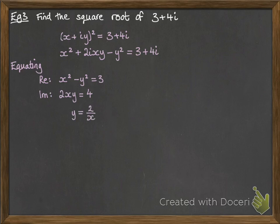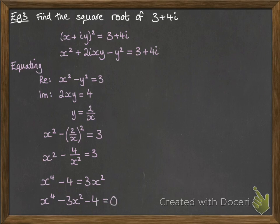And then, using simultaneous equations, if we rearrange that imaginary part into y equals 2 over x and substitute it into that first equation, then we get this. So, we have a quadratic to solve here. We're just going to rearrange it into an easier form. And so, we end up with this factorization.